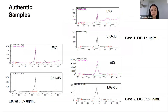Two authentic samples were run with the method to show that it was fast and allowed for the quantitation of ETG concentration in urine, confirming that the individuals had consumed alcohol over the past few days. The method can be further used to monitor rehabilitation patients for alcohol abuse and further research in psychology for alcohol addiction.